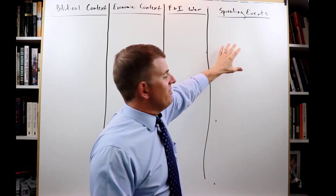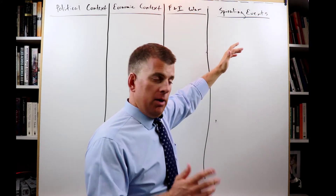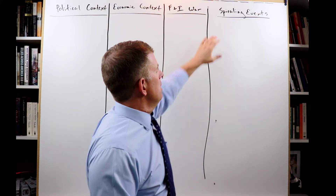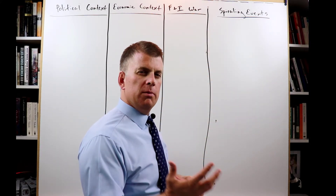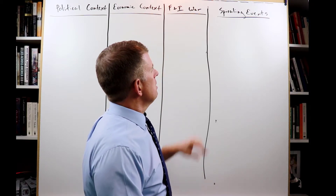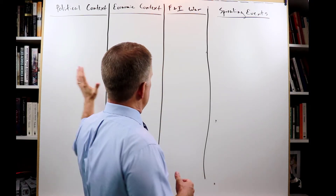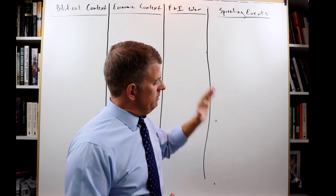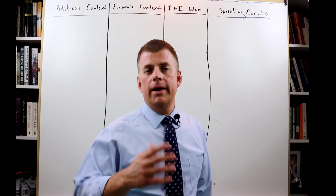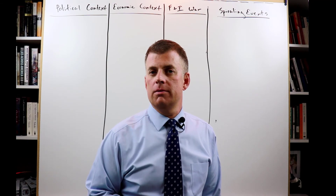And then there are these spiraling events — actions by England, by Great Britain, and the colonies, one after the other. We're going to go through some of the most well-known ones, at least the ones in the TEKS. And all of this is going to build up to 1776 and revolution. So let's go ahead and get started.